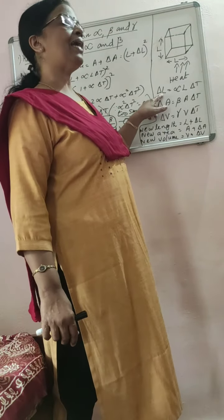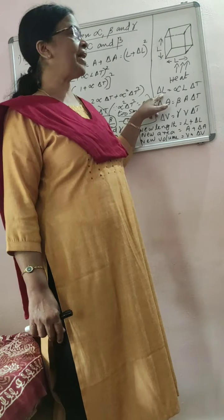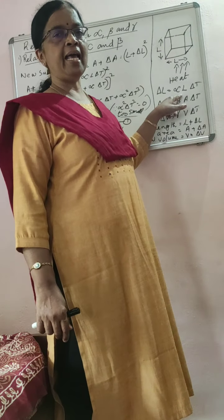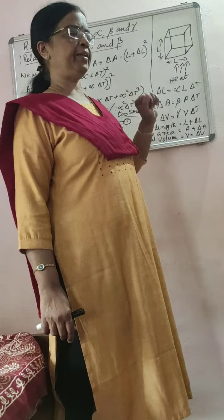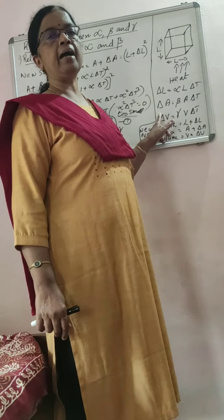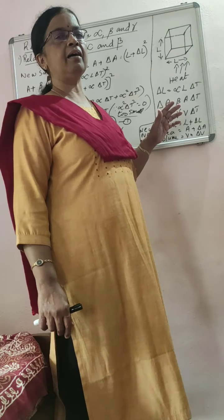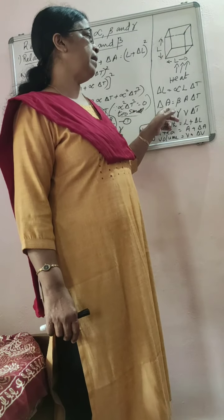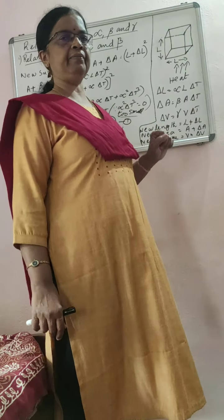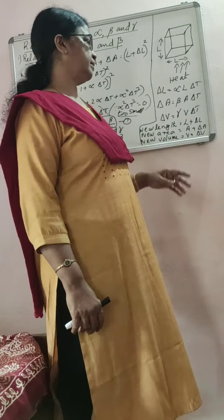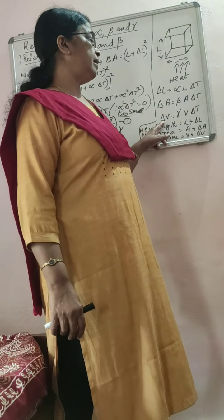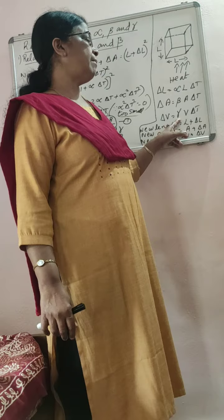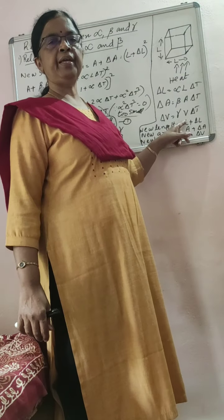Then delta L, the change in length — we have already got the expression: delta L equals alpha L delta T. Similarly, the increase in area — from last class we have seen — delta A equals beta A delta T, where delta T is the rise in temperature. And the increase in volume equals gamma V delta T.